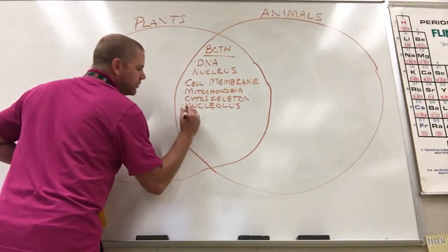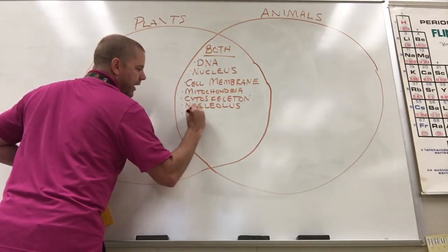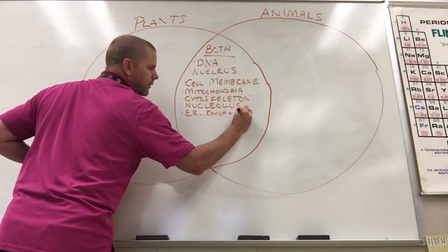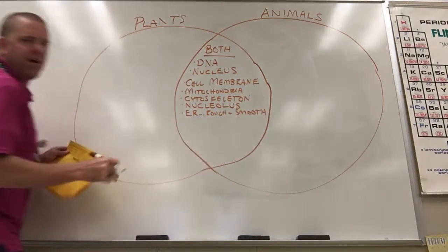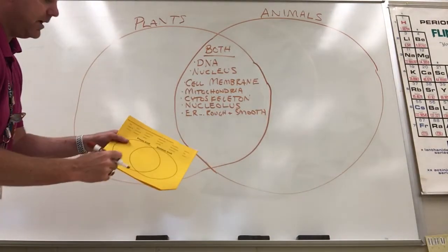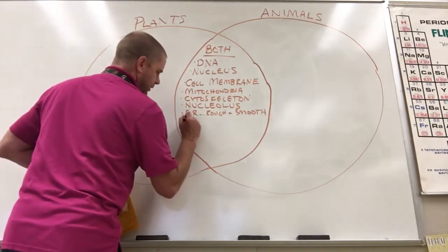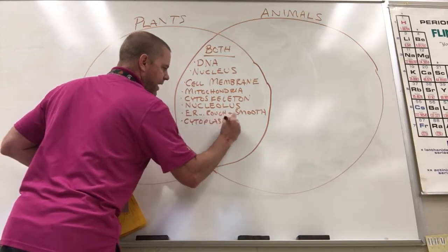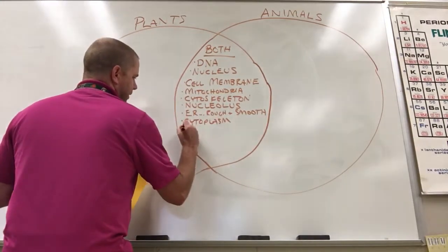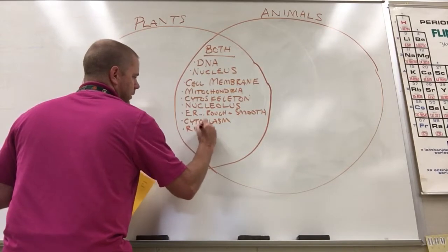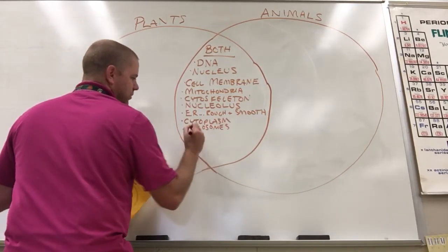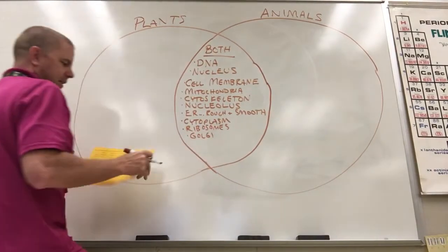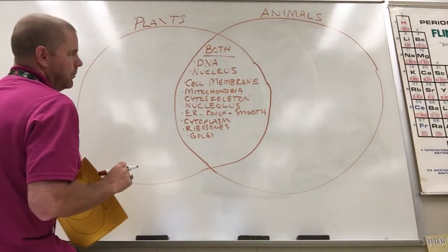As far as ER goes, both rough and smooth endoplasmic reticulum are present in both cells. So far everything has belonged to both. They both also have cytoplasm, ribosomes, and Golgi apparatus — also called Golgi bodies or Golgi complex, whichever term you prefer.